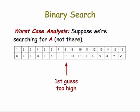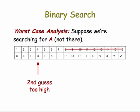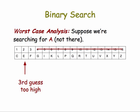Let's look at another example. Suppose we're searching for A in this list of 16 letters, but notice that A is not there. The letters are in order. Our first guess will be at the midpoint of the list. That is too high, so we cut off the top half. We guess the midpoint of the bottom half of the list. That's too high, so we cut off the top half of that sublist. And make a third guess at the midpoint of the sub sublist. That's too high, so we cut off the top half of that list.